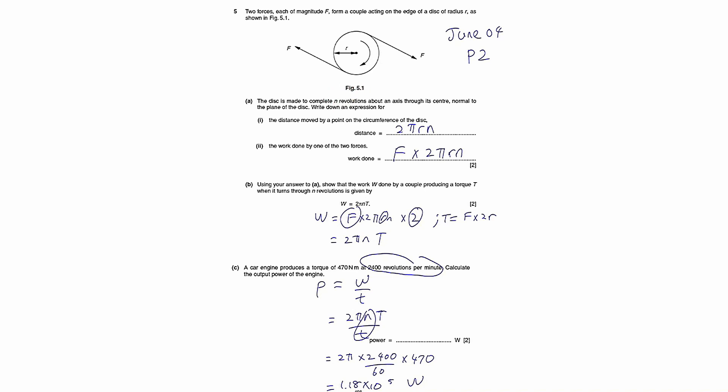But because it's completing n revolutions, so let's say there are 3, you will complete 3 revolutions. The total distance will be 2πr times n.